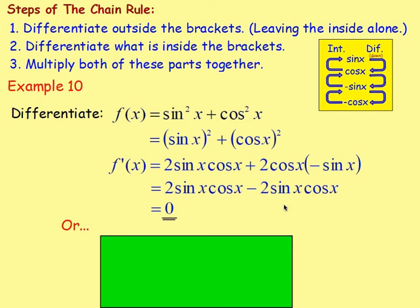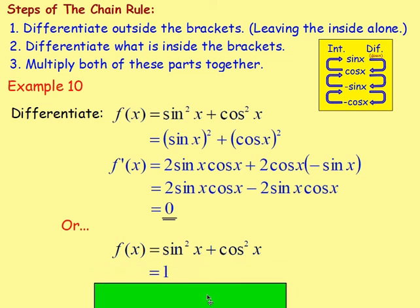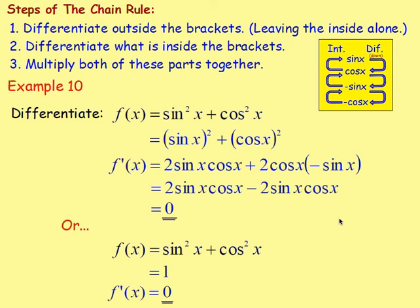There's another way to do that. Think back — what is sine² x plus cos² x equal to? It equals 1. So you could rewrite that as 1, and if you differentiate 1, f'(x) is just 0. Two different ways to do it — it doesn't matter which way you do it, you would get the same number of marks and the same answer.